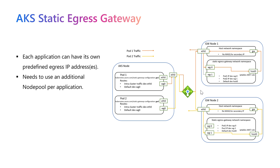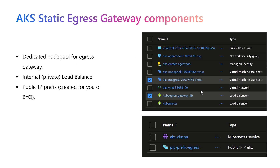Each application or pod that you want to give a specific IP address will need a dedicated gateway node pool. That is the disadvantage of this add-on — it consumes lots of resources within your cluster. You will create another node pool dedicated for this, but those node pools are virtual machines or virtual machine scale sets, meaning you are creating extra capacity. When you enable AKS Static Egress, a new VMSS and a new node pool are created in the node resource group, along with a new internal load balancer.